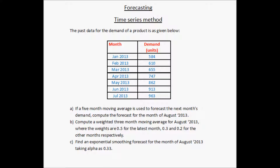Let us look at an example of forecasting using time series methods. The past data for the demand of a product is given in this table. For January 2013 the demand was 584 units, for February 2013 it was 610 units, for March 2013 it was 655 units, and so on till July 2013 which has a demand of 963 units. These are the actual demand values for each of these months.